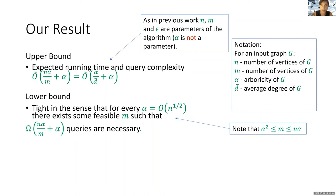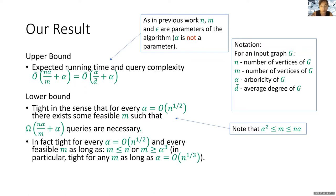Tight in the sense that for every alpha which is at most √n, there exists some feasible m such that this is indeed the number of queries which are necessary. By feasible m, we mean m which is at least alpha² and at most n·alpha, which is the case in graphs of arboricity alpha. In fact, we show that our bound is tight for every alpha which is at most √n and feasible m, as long as m is at most n or m is at least alpha³. In particular, this means the algorithm is tight for any m as long as the arboricity is at most n^{1/3}.